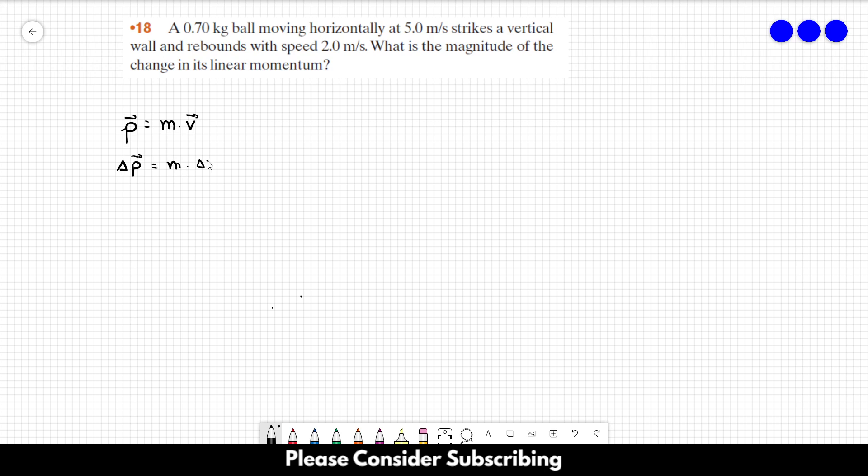The magnitude of the change in linear momentum equals mass times the magnitude of delta V. Let's make a diagram of what's happening.